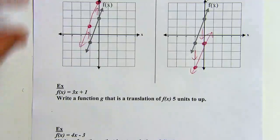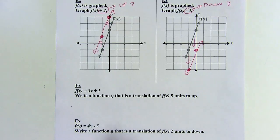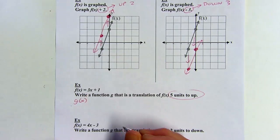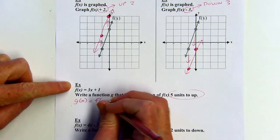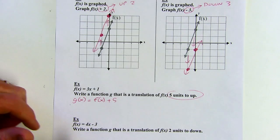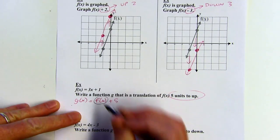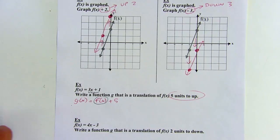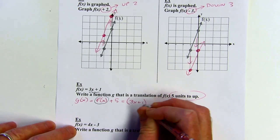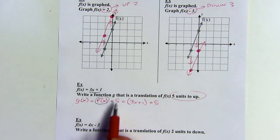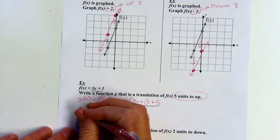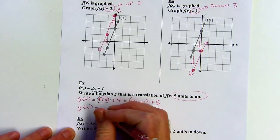Now let's try writing some functions. We're going to go 5 units up, so my new function g is going to be f of x plus 5 — I'm adding to the output, not the input; that would shift left or right. To simplify, I substitute in for f of x, which equals 3x plus 1. So it's the quantity 3x plus 1, plus 5. I combine 1 and 5 to get 3x plus 6.